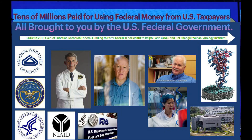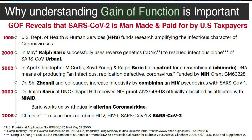A brief look at gain-of-function history — these are the players: Anthony Fauci, Peter Daszak, Ralph Baric, and Shi Zhengli. By the way, you don't put a level-four virology lab in the middle of a city. We put those away from people so that when there's a problem it doesn't get spread to the population.